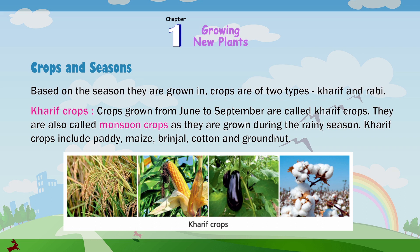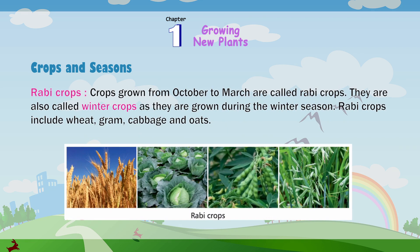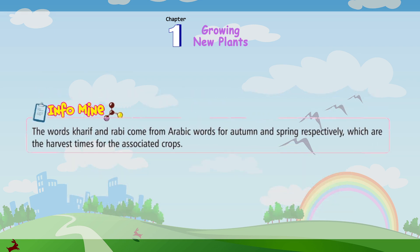Kharif crops include paddy, maize, brinjal, coconut and groundnut. Rabi crops: crops grown from October to March are called Rabi crops. They are also called winter crops as they are grown during the winter season. Rabi crops include wheat, gram, cabbage and oats. Info mind: the words Kharif and Rabi come from the Arabic words for autumn and spring respectively, which are the harvest times for the associated crops.